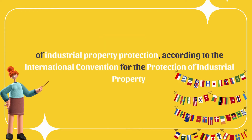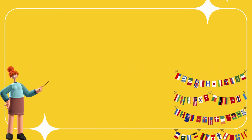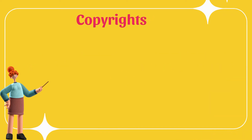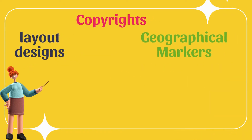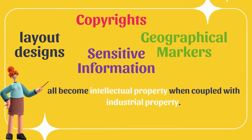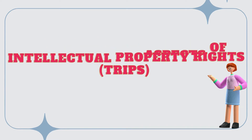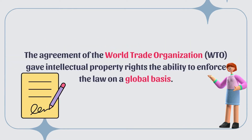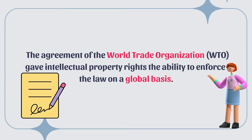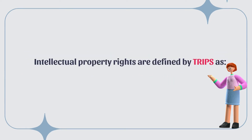According to the International Convention for the Protection of Industrial Property, copyrights, geographical markers, layout designs, and sensitive information all become intellectual property when coupled with industrial property. The Trade-Related Aspects of Intellectual Property Rights (TRIPS) Agreement of the World Trade Organization gave intellectual property rights the ability to enforce the law on a global basis.